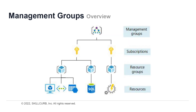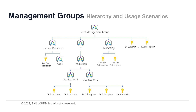If your organization has many Azure subscriptions, you may need a way to efficiently manage access, policies, and compliance for those subscriptions. Management groups provide a governance scope above subscriptions. You organize subscriptions into management groups, and the governance conditions you apply cascade by inheritance to all associated subscriptions. Management groups give you enterprise-grade management at scale no matter what type of subscriptions you have. However, all subscriptions within a single management group must trust the same Azure Active Directory tenant. You can apply policies to a management group that limits the regions available for virtual machine creation, and you can build a flexible structure of management groups and subscriptions to organize your resources into a hierarchy for unified policy and access management.